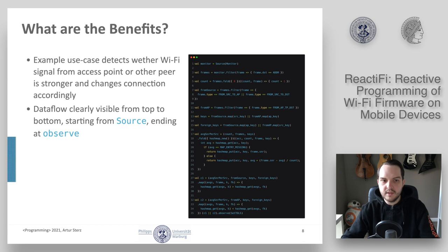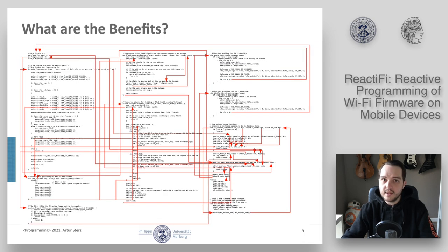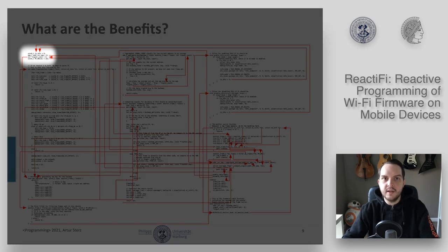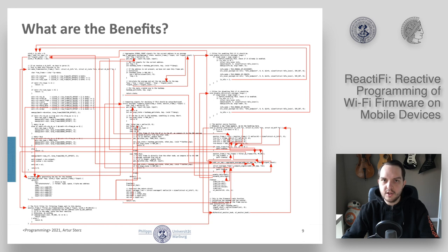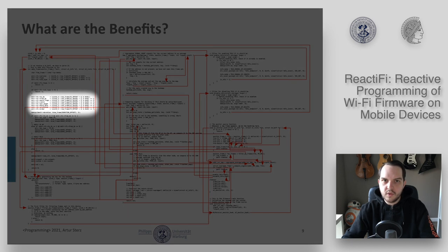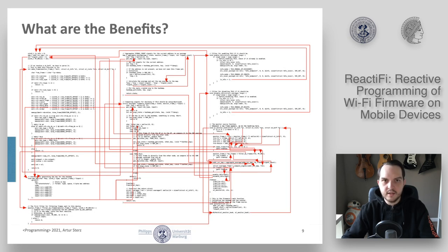Let's compare this to the C equivalent — the same functionality but directly implemented in C. First, it is about nine times more code. You cannot really reason about data dependencies; the red arrows visualize references to the same memory, but it is very difficult to keep track. Additionally, there is implicit global state, as indicated by the four variables declared in the upper left corner. There is also explicit memory allocation that has to be managed, and the parsing of Wi-Fi frames is done using bitwise shifts, so developers have to know how data is structured and the correct relative memory addresses. All of this is handled transparently by ReactiFi.